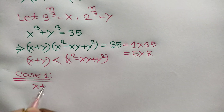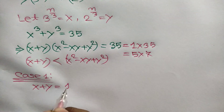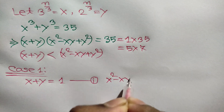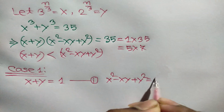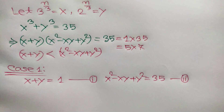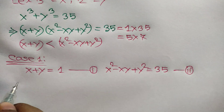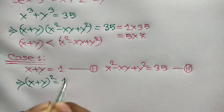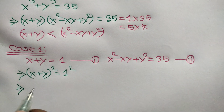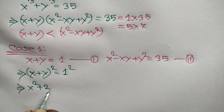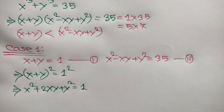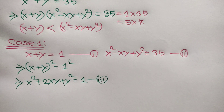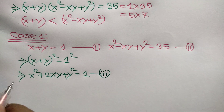Case 1: x plus y is equal to 1 — equation 1 — and x squared minus xy plus y squared is equal to 35 — equation 3. Subtracting equation 3 from equation 2 leads to no valid solution, so Case 1 is set aside.